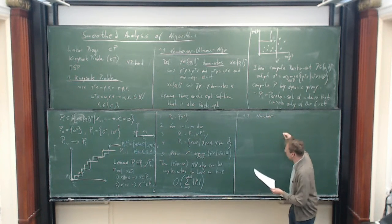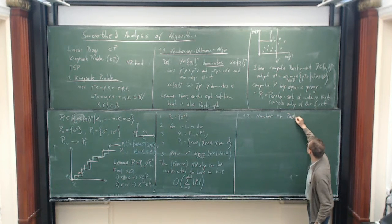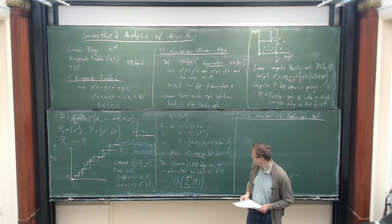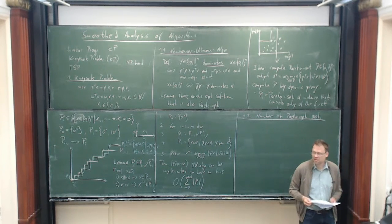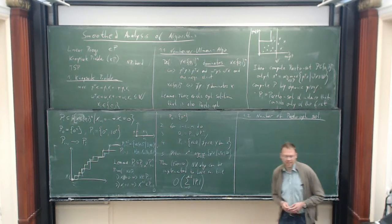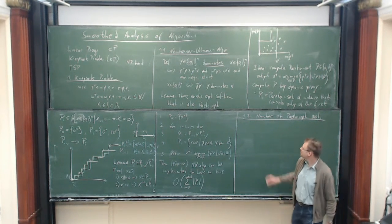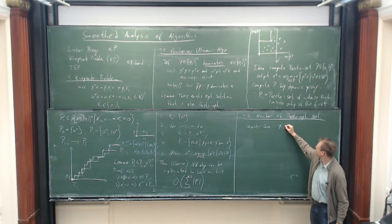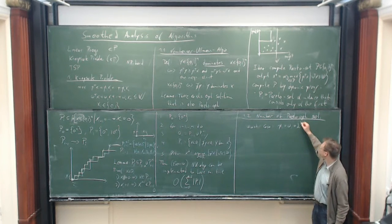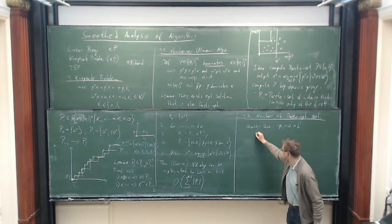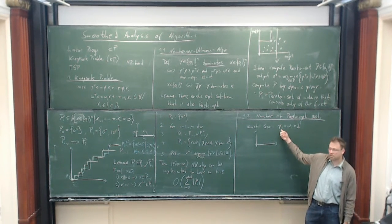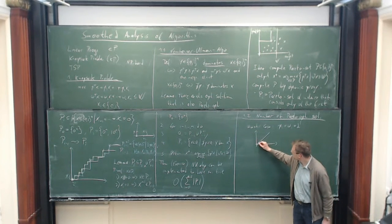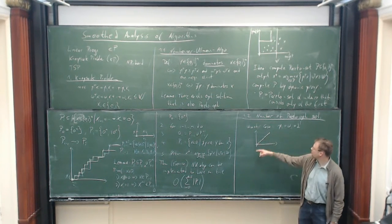Let's study this first in the worst case. In the worst case, every solution is Pareto optimal. A worst-case example is easy to find: set p_i = w_i = 2^i. Then since the weight equals the profit for every item and we chose them as powers of 2, each of the 2^n solutions has a different weight, so we really get 2^n solutions along the diagonal line — all Pareto optimal.